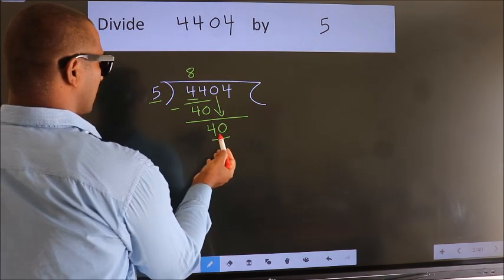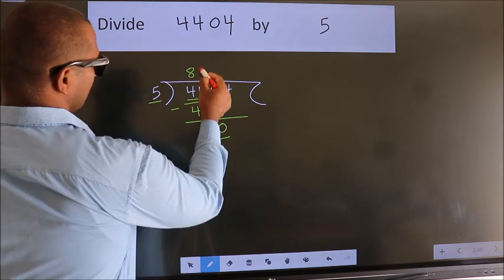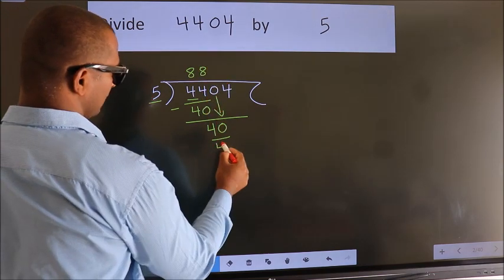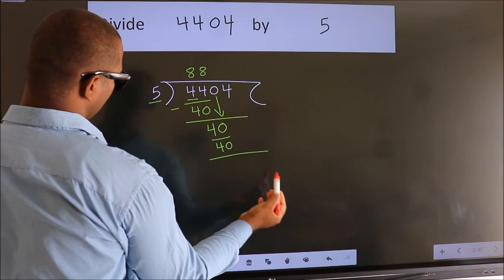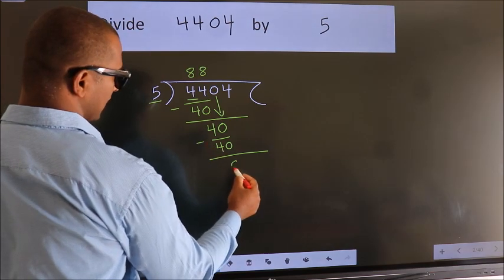When do we get 40? In 5 table. 5×8=40. Now we subtract. We get 0.